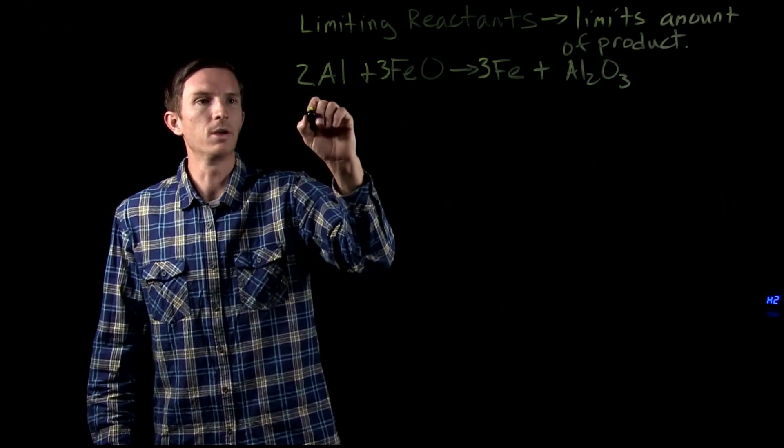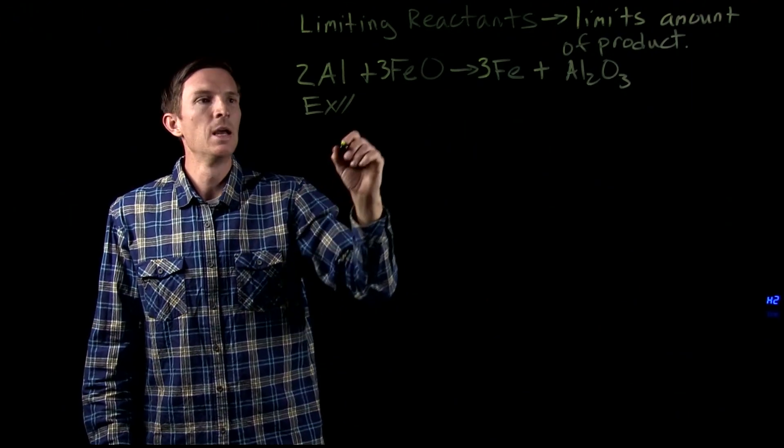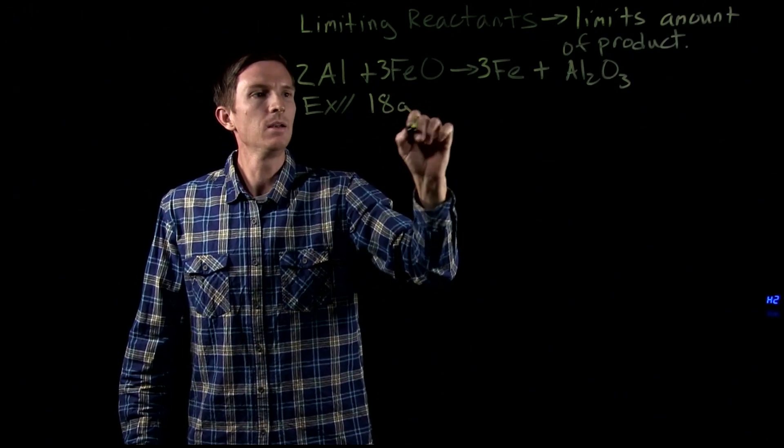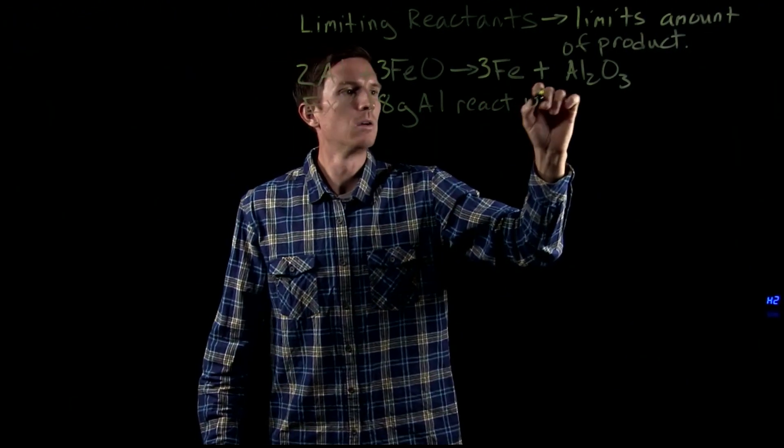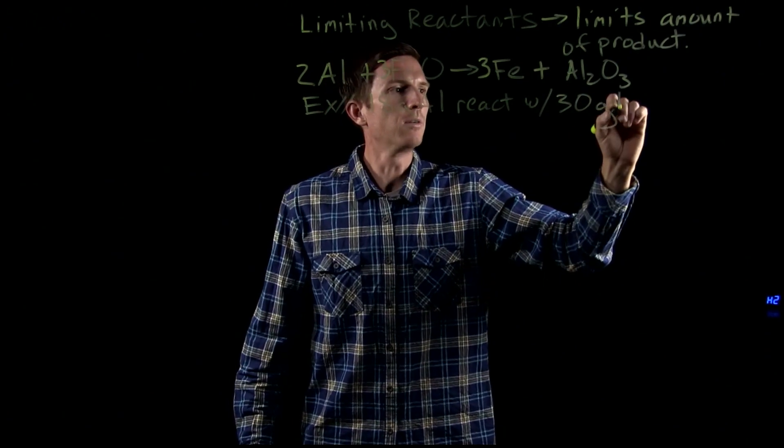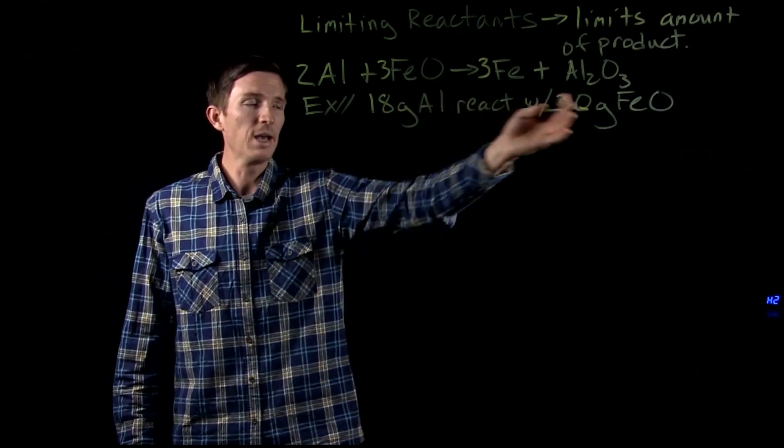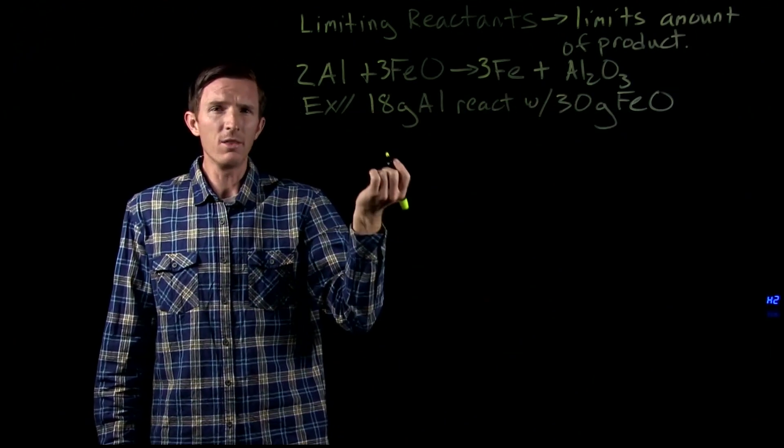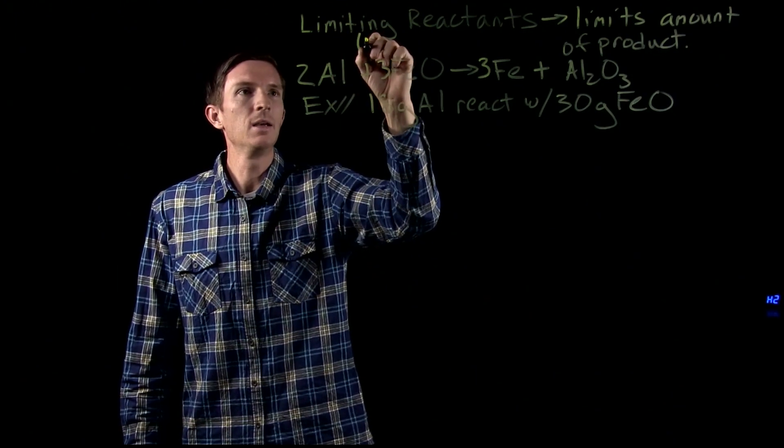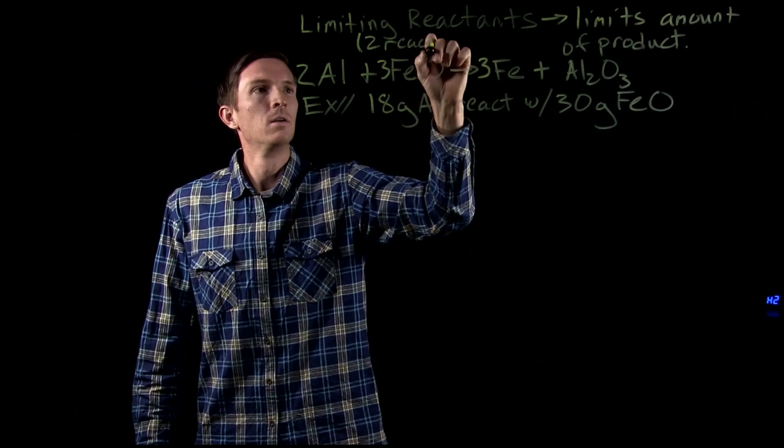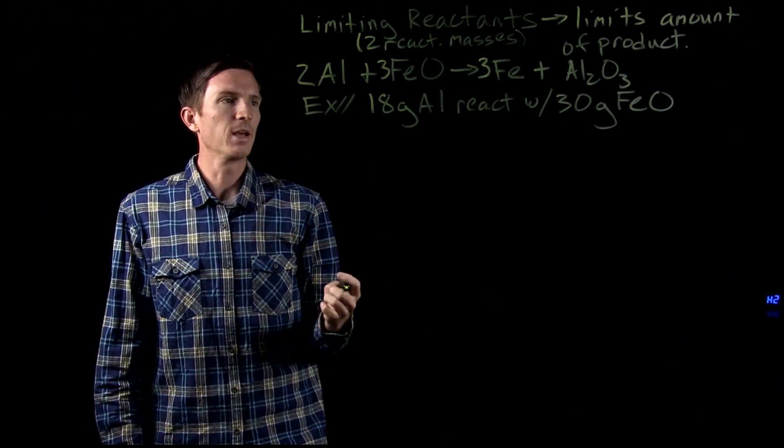So let's look at our example here. What we are given, the data that we are provided, is that we have 18 grams of aluminum and that will react with 30 grams of iron oxide. So we have these two reactants. A good way that we know that we have a limiting reactant type of issue or problem is that we see two reactant masses provided to us, or amounts, moles, etc.